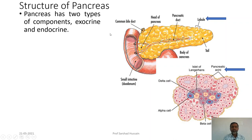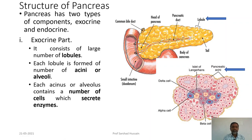The pancreas has two types of components: exocrine and endocrine. The exocrine part is composed of many lobes called lobules. Each lobule is made up of a number of acini or alveoli — cells that secrete enzymes for the digestion of various food products.